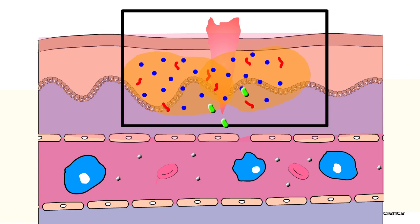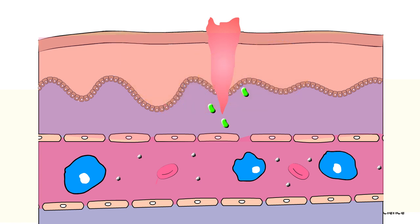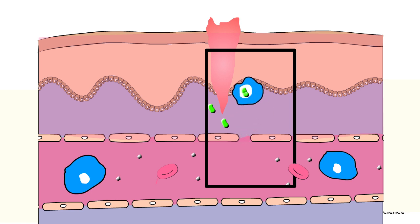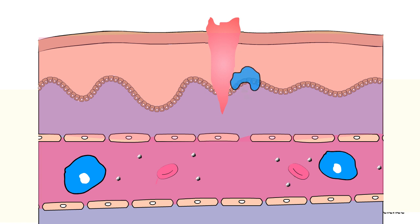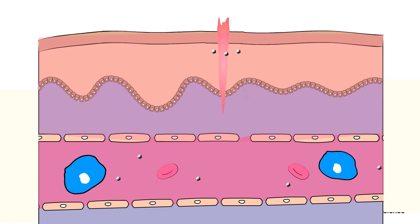The accumulation of fluid results in swelling of the affected area. The increased permeability also allows phagocytes to squeeze through the wall of blood vessels to the affected area. Phagocytosis leads to the clearance of pathogens. Finally, clotting factors seal the wounded area. If the infection is mild, this response is sufficient to eliminate the pathogen.